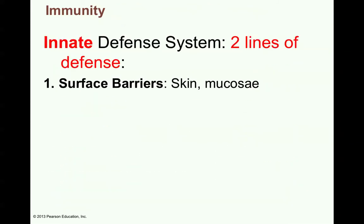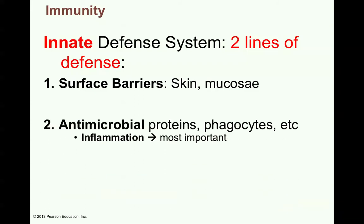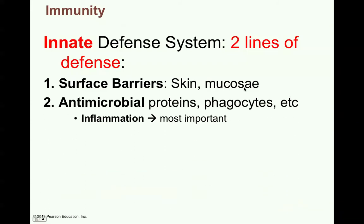The innate defense system is broken into two major lines of defense. One would be the surface barriers — the skin and mucosa, and all of the types of chemicals and activities that these organs use to keep pathogens out of the body. Then you've got your antimicrobial proteins, phagocytes, etc. In case the pathogen enters the tissues and breaches this barrier, this process is called inflammation. It's very important to fight infection, but it's not real specific to a particular kind of pathogen.